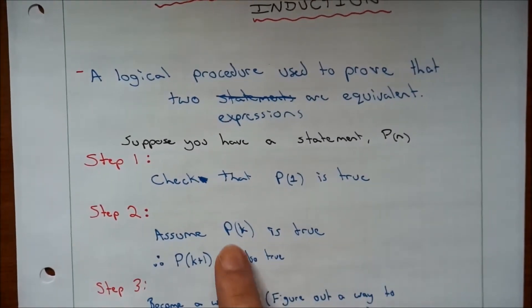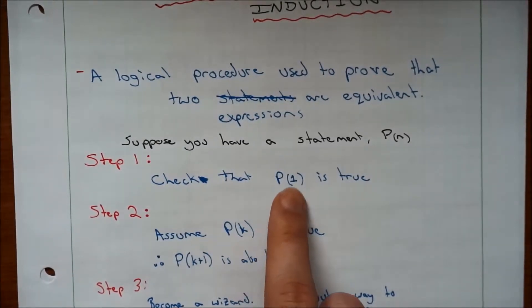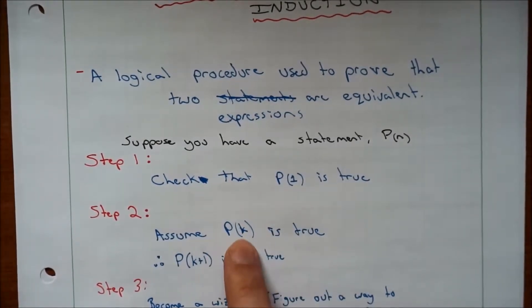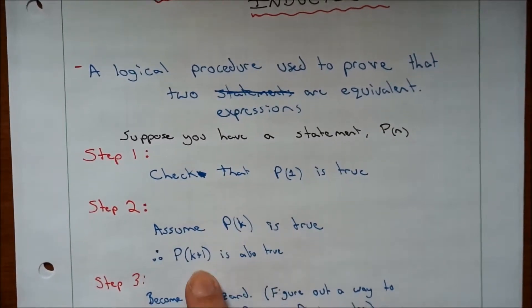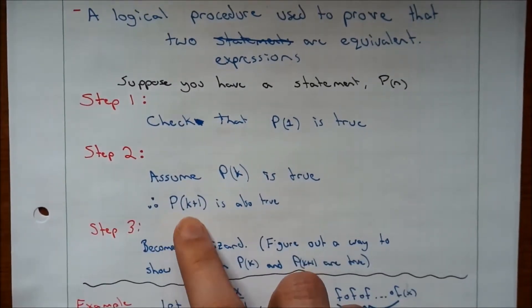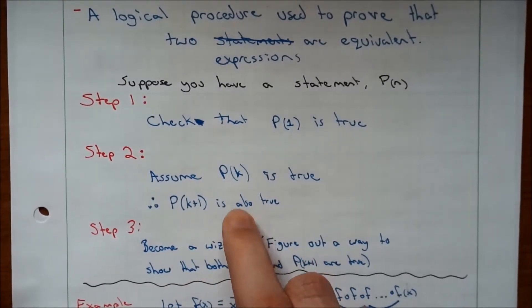You move on to the next step where you're going to assume P(k) is true. So basically we're just going to say it worked for 1, let's assume that it works for everything. And if it does work for everything, that means that P(k+1) must also be true.